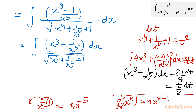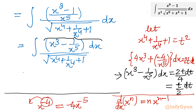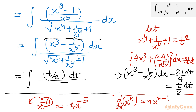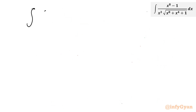Now you can see the numerator is matching what we have here. So in that place I will write integration (t/2) dt. And in the denominator, if you see it is the square root of t^2, so the square root and square will cancel out, leaving just t in the denominator. So the numerator is t/2 and the denominator is t. I will write (t/2) over t, dt.